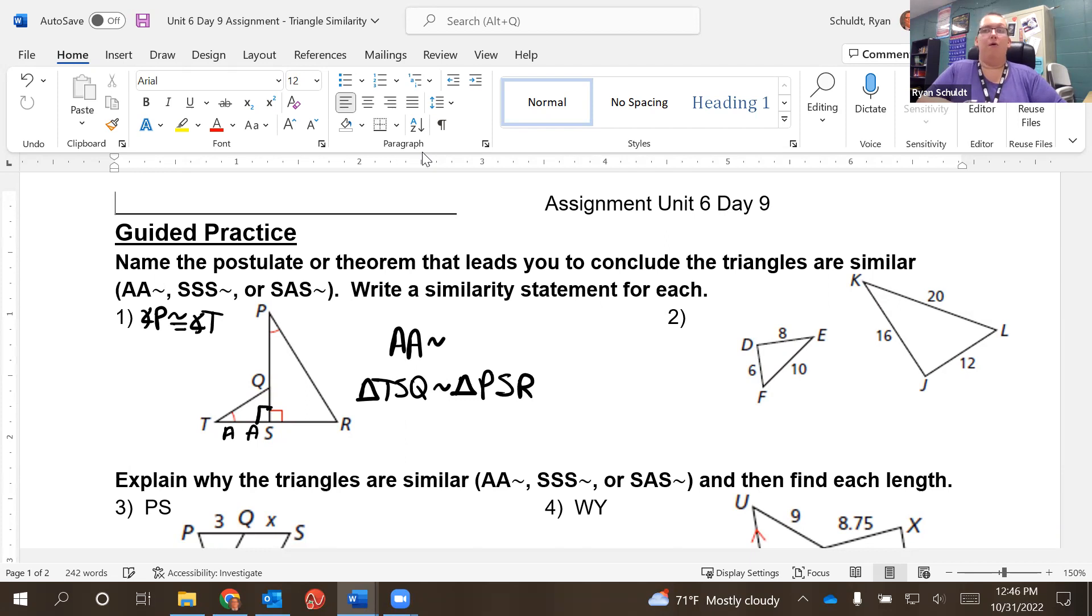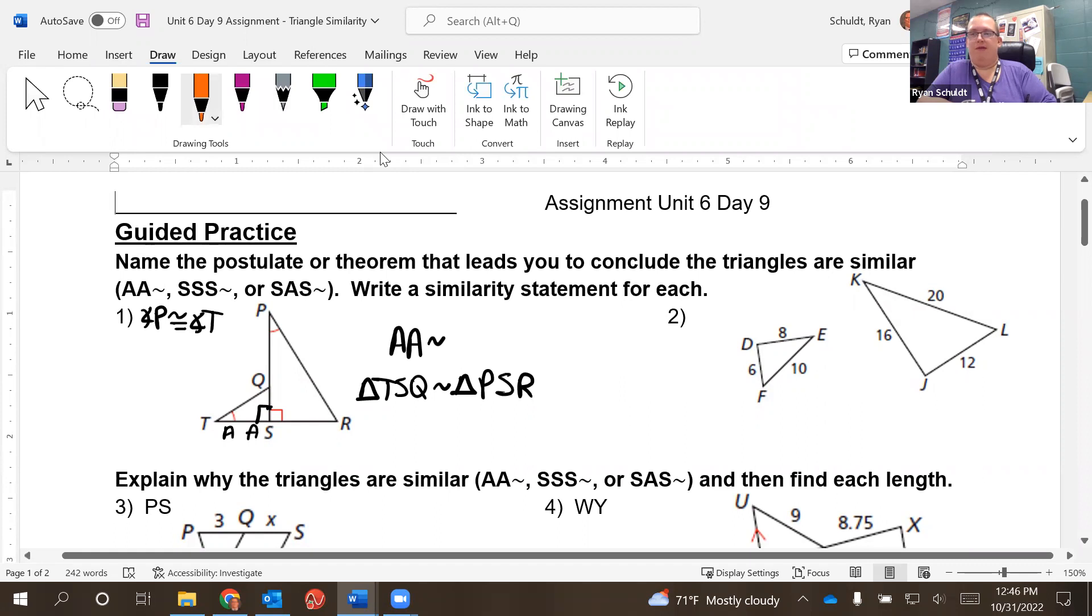There's number one. Number two, they only give us sides. So we've got to check our ratios here. Well, let's see, I'm going to go with the biggest side first. That's going to be 10 over 20. And then, let's see, I'm going to go with eight next. The next smallest is 16. And then six over 12. What do all of these reduce to? So we're going to go with 10 over 20. One half.